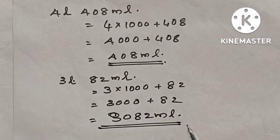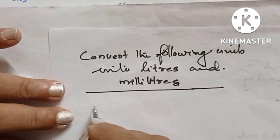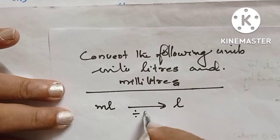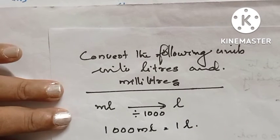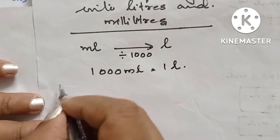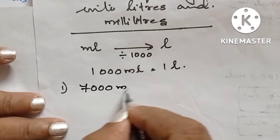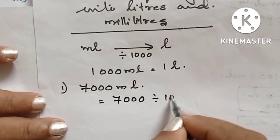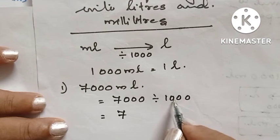Next, we are converting the following into liters and milliliters. When we are converting milliliters to liters, we have to divide by one thousand. That means one thousand milliliters equals one liter. The first question is seven thousand milliliters. We are dividing by one thousand. Seven thousand divided by one thousand equals seven liters.